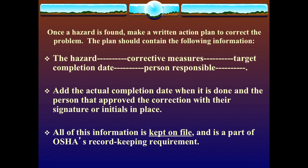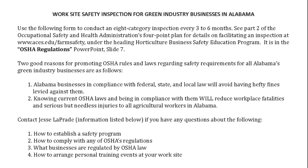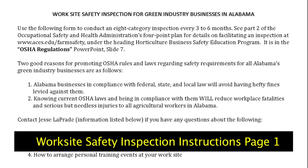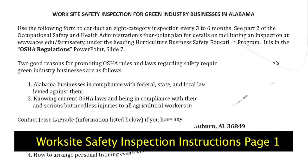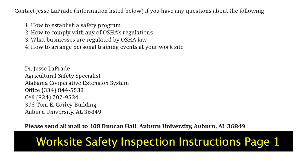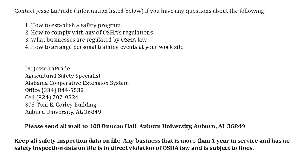All this information is kept on file and is part of OSHA's record-keeping requirement. Now let's take a look at a form I have put together. It is not complete — I can't include all equipment for all businesses — but it gives you an example of how you can make your own form, which makes inspections easier. This is page one of four pages, covering part two of OSHA's four-point plan.